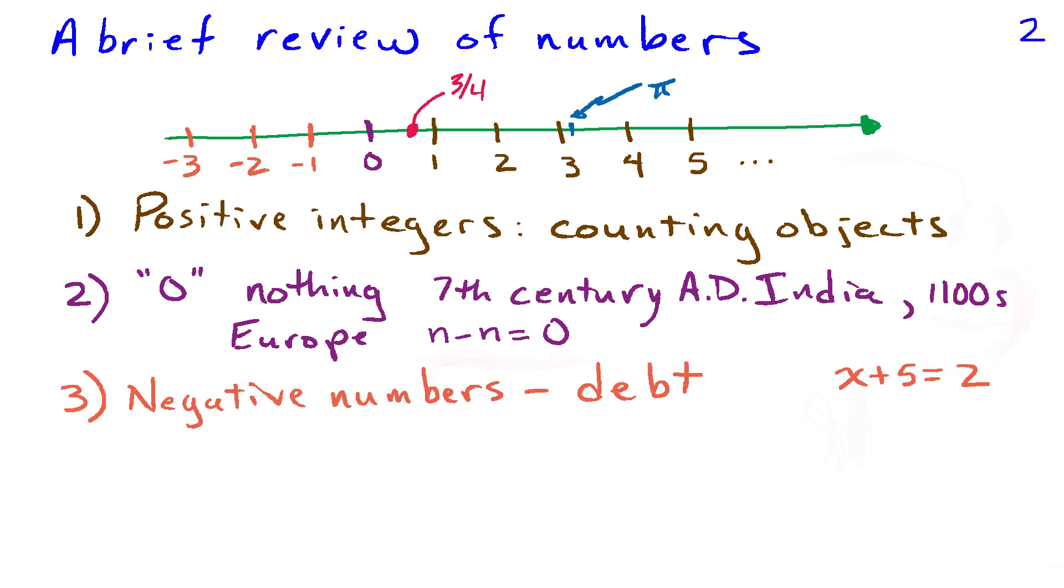Similarly, we can extend the types of numbers we work with to negative numbers, and that allows us to deal with concepts of debt and to solve algebraic problems like x + 5 = 2. Then you can throw in rational numbers, ratios of integers. If I have a problem like 3x = 4, the solution to that involves a rational number.